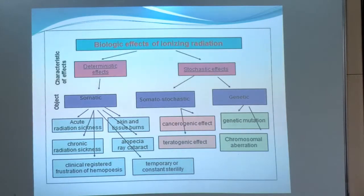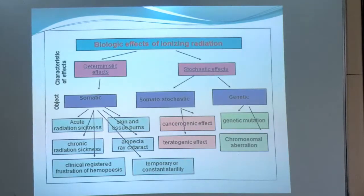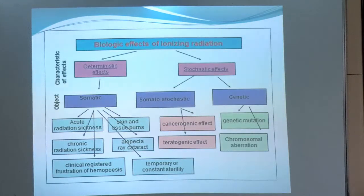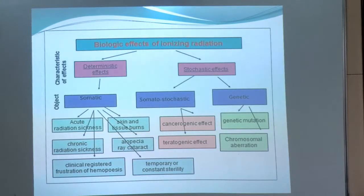Somatic effects include acute radiation sickness, skin and tissue burns, chronic radiation sickness, alopecia, x-ray cataract, depression of hematopoiesis, and temporary or permanent sterility. Prolonged radiation gives rise to carcinogenic and teratogenic effects. High doses over prolonged periods cause genetic mutations and chromosomal aberrations leading to chromosomal abnormalities.